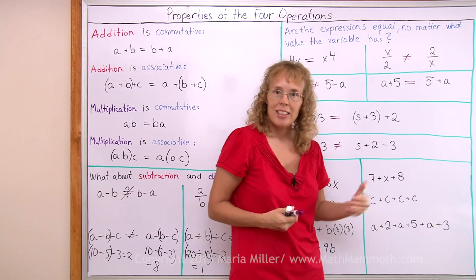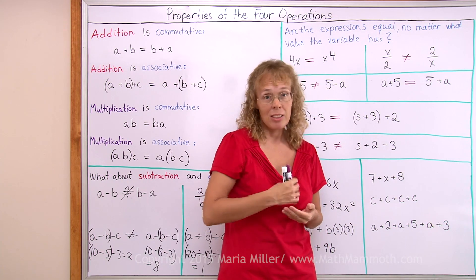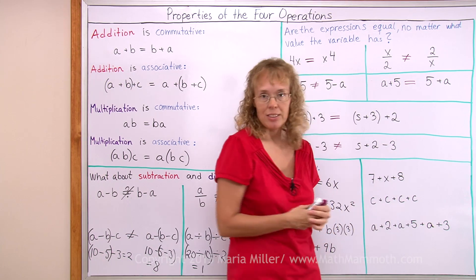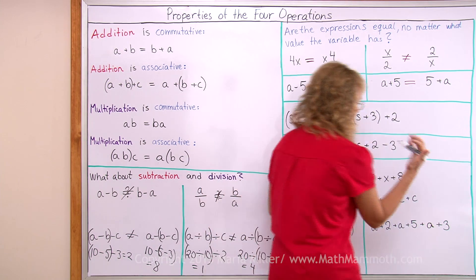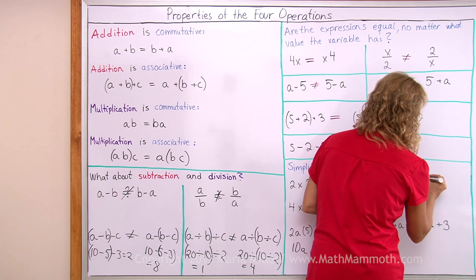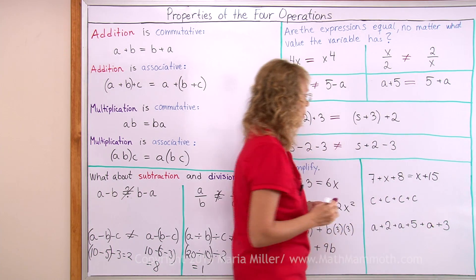7 plus x plus 8. Now I can use the commutative and associative properties of addition. And add 7 and 8 first and get 15. So it is 15 plus x or x plus 15. Either way.